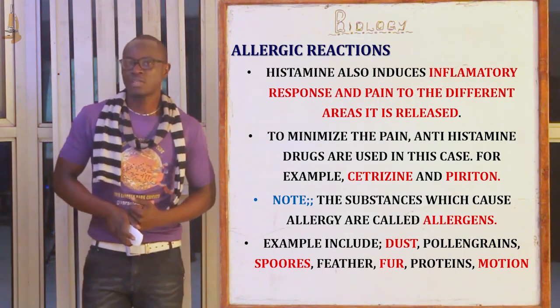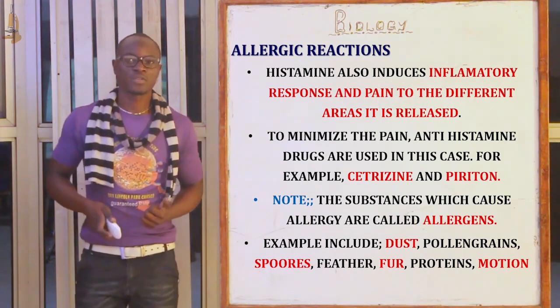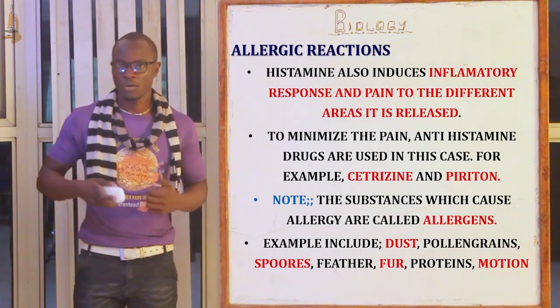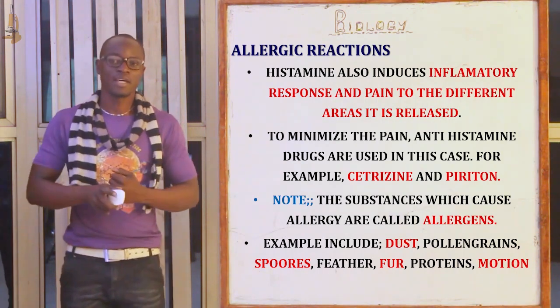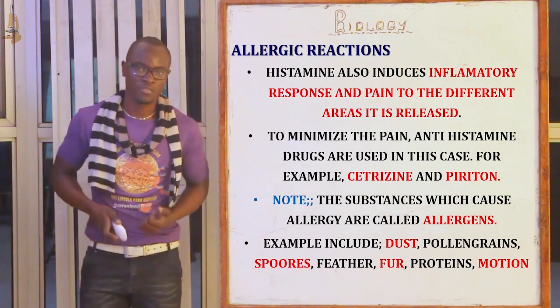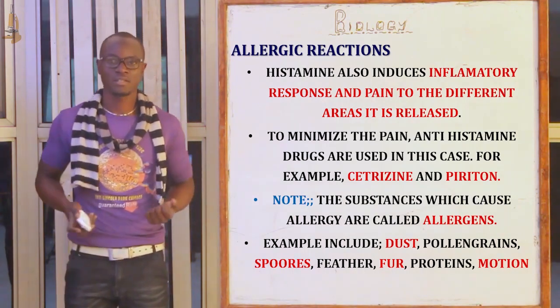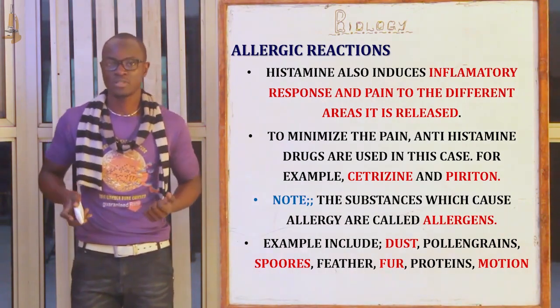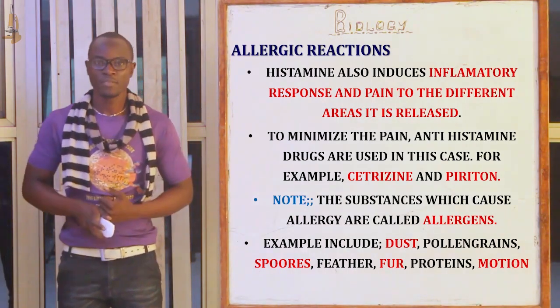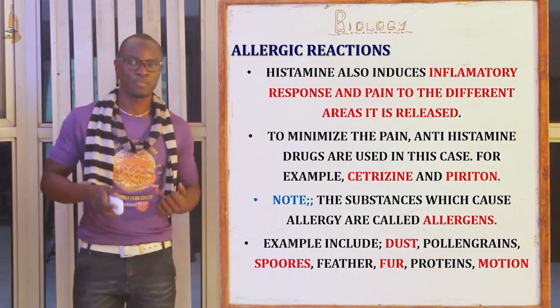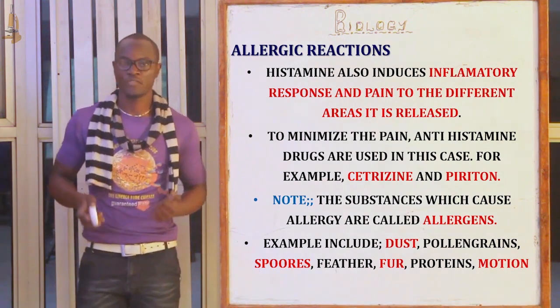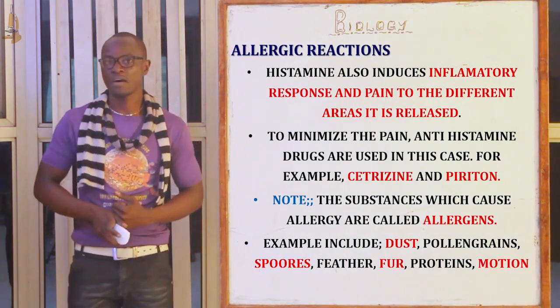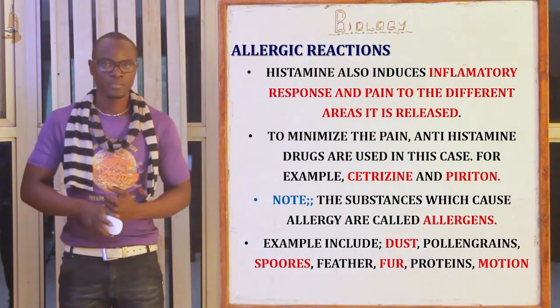The substances that cause an allergy are called allergens. Examples of allergens include dust, pollen grains, poison, feathers, proteins, and moisture.